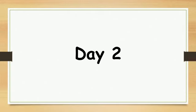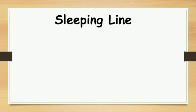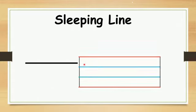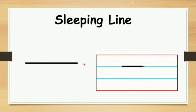Day 2: Sleeping line. Children, kindly repeat: sleeping line. A line from left to right is called a sleeping line — you are going to write from left to right. On the four line, you need to write on line 2. Repeat: sleeping line. Very good.